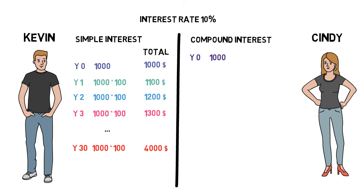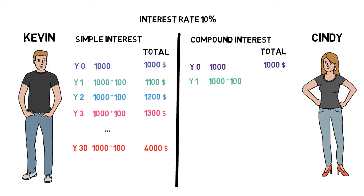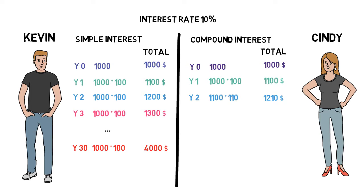Now let's see what happens to Cindy. She also invests $1,000 just as Kevin did, and just as he did, she also gets a 10% interest rate on her investment each year. But instead of withdrawing the interest every year, she leaves the money invested and gets compound interest. After one year, she gets $100 of interest, just like Kevin. When another year has passed, it's time for the money to grow again — and here comes the interesting part. After the second year, she doesn't get $100 but $110, which is 10% of the $1,100 she accumulated after the first year. Thus, after two years, she now has $1,210.